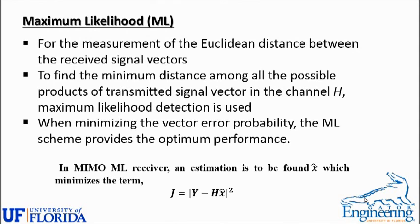We move on to another equalization technique: maximum likelihood, or ML detection. The measurement is done in terms of the Euclidean distance between the received signal vectors, finding the minimum distance among all possible products of transmitted signal vectors in channel H. When minimizing the vector error probability, the ML scheme provides optimum performance, making it one of the best schemes known in MIMO.